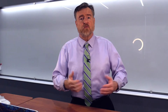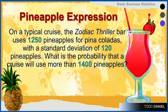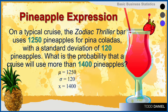How could we use this for calculation? Using our business of the week, let's examine what happens when we make pineapple piña coladas. On a typical cruise, the Zodiac Thriller bar uses 1,250 pineapples for piña coladas, with a standard deviation of 120 pineapples. What is the probability that a cruise will use more than 1,400 pineapples? We know the mean is 1,250, the standard deviation is 120, and the x-value is 1,400, and we want to find the probability of scores above 1,400.